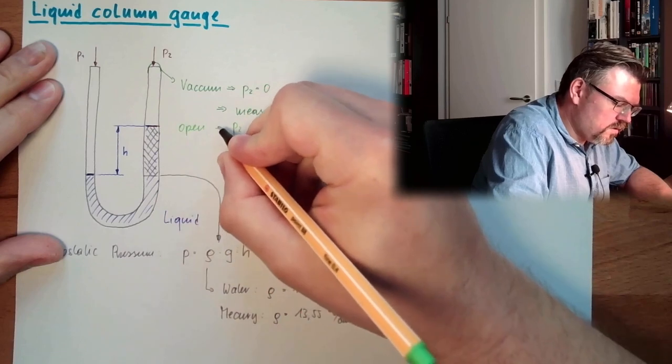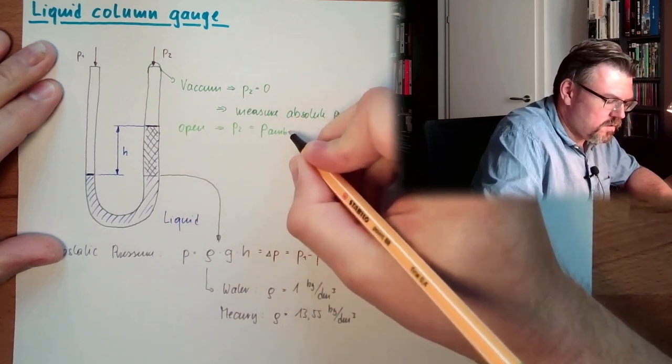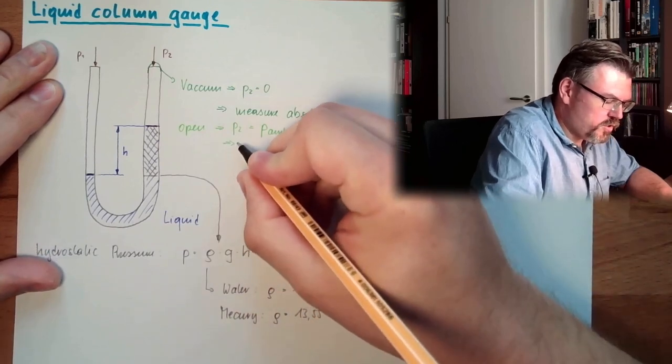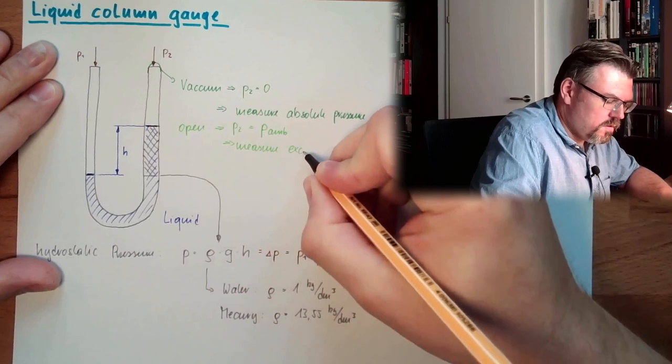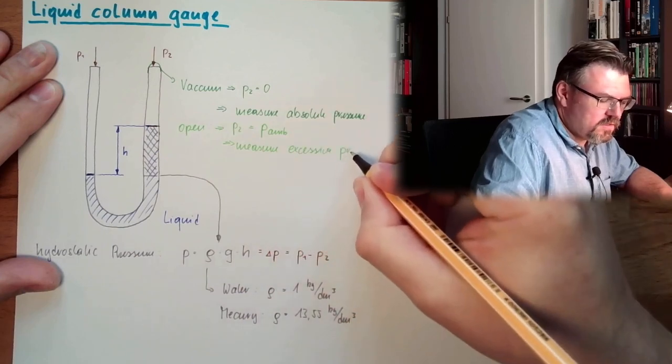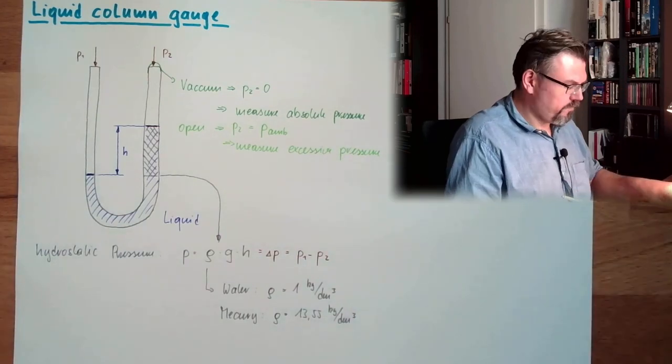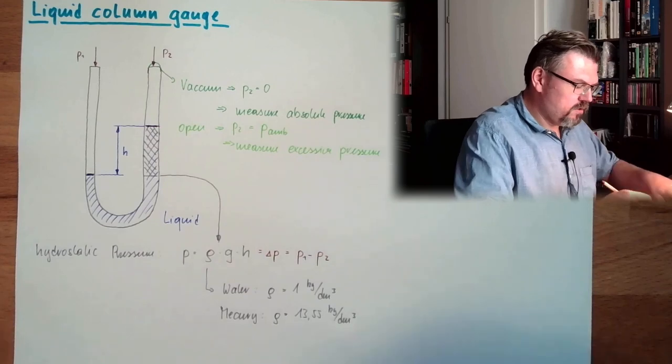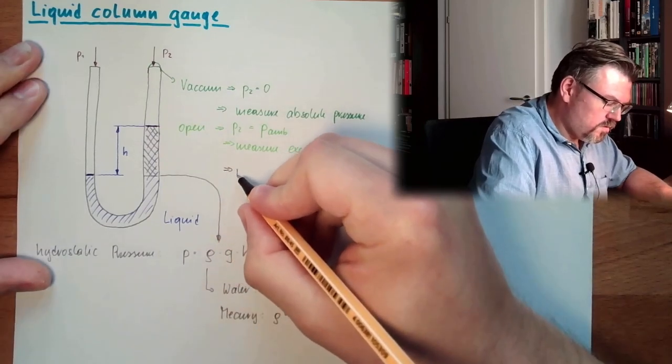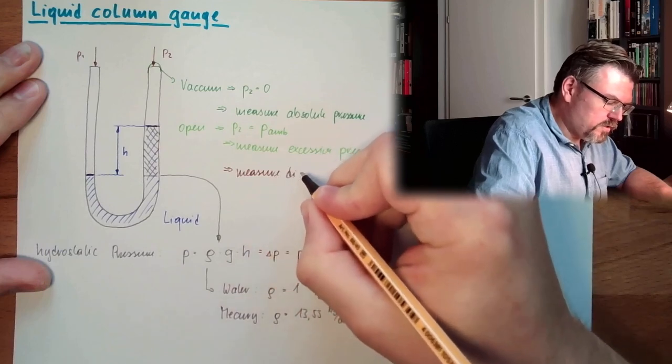Alright? If P2, if it's open, just open, P2 equals ambient pressure, measure excessive pressure. And if it's just another pressure, we measure differential pressure.